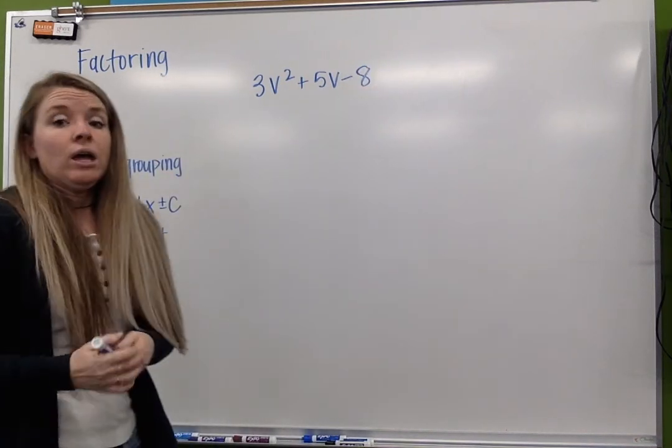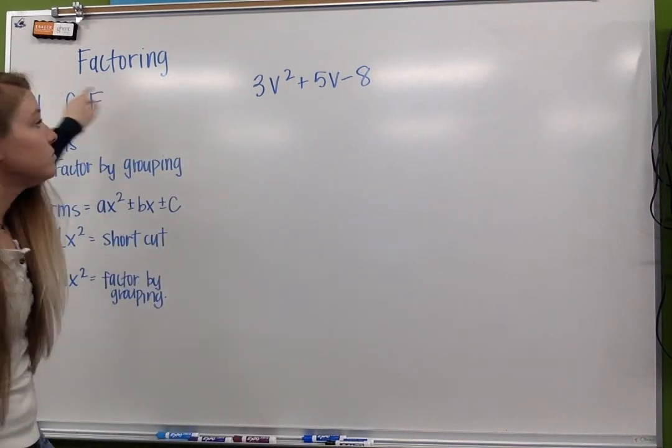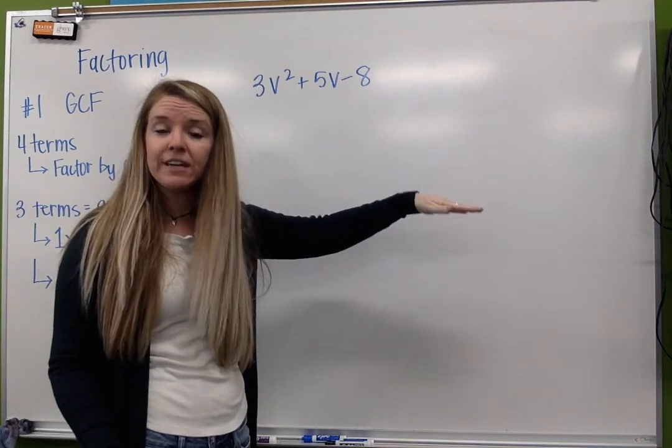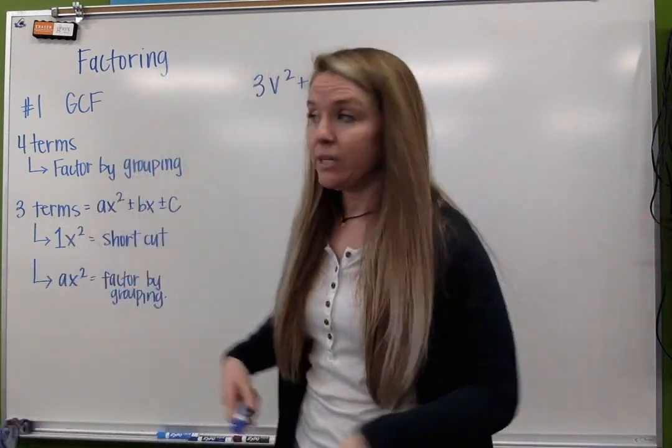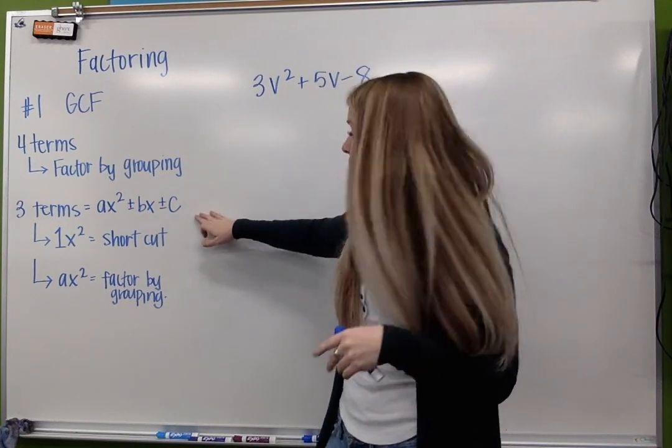If we go through our checklist, can I factor out a GCF? 3, 5, and negative 8, nothing in common. They don't all have v's. I can't factor anything out. So now what do I do? Does it have four terms? Nope. Moving forward.